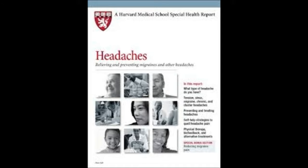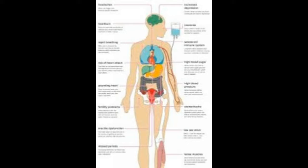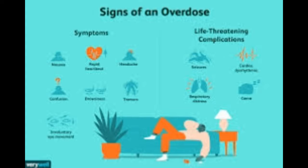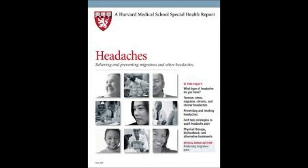Auras are sensory disturbances that occur before the migraine attack. Patients may have mixed positive and negative auras. Positive auras include bright or shimmering light or shapes at the edge of their field of vision, called scintillating scotoma, which can enlarge and fill the line of vision. Other positive aura experiences are zigzag lines or stars. Negative auras are dark holes, blind spots, or tunnel vision.